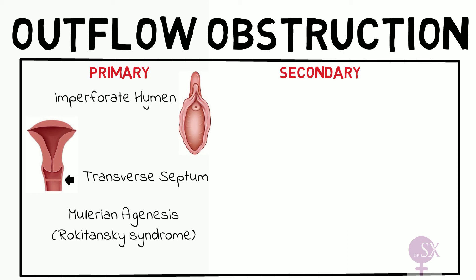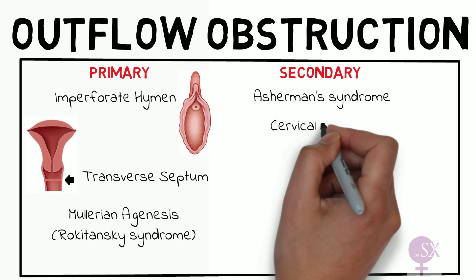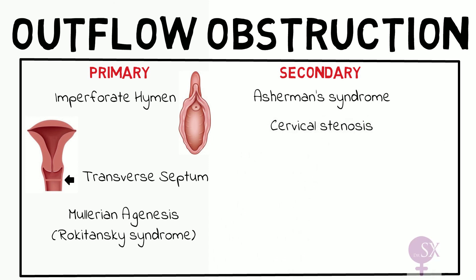Causes of secondary amenorrhea include Asherman syndrome — a rare condition where there is scarring and adhesions within the uterine cavity secondary to excessive postpartum curettage, for example during an ERPC, which may cause the walls of the uterus to stick together causing amenorrhea. Finally, we have cervical stenosis, where the cervix is closed secondary to repeated procedures on the cervix, trauma, or repeated infections, causing secondary amenorrhea.